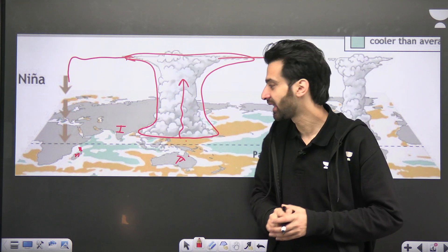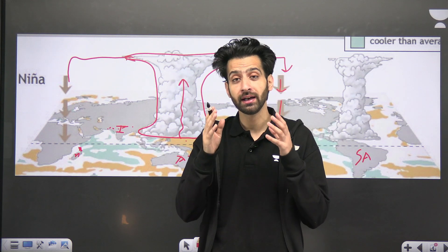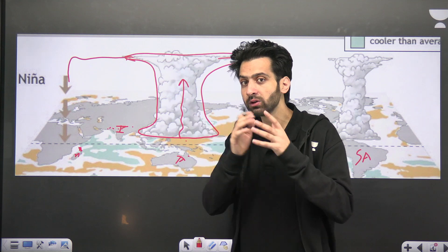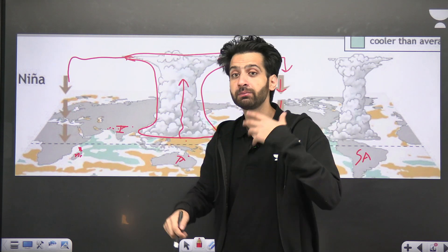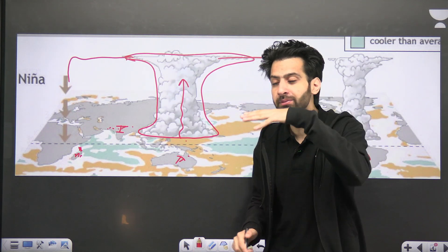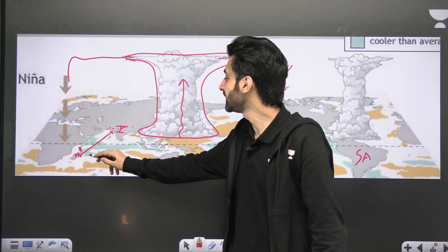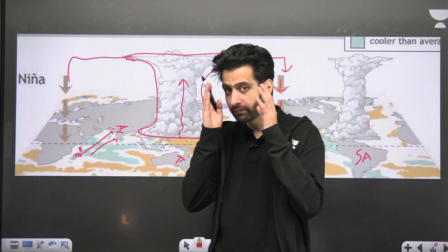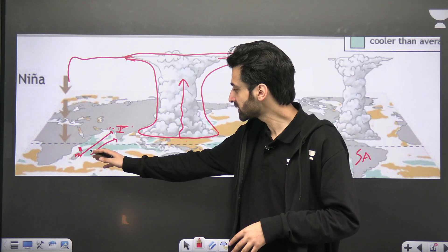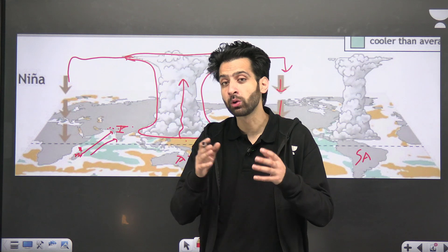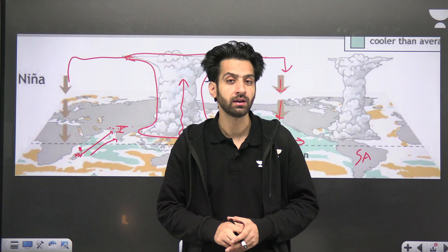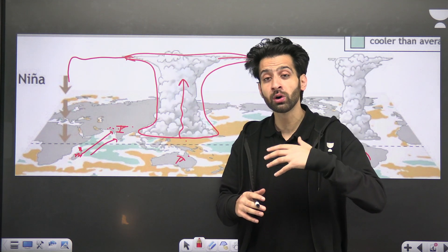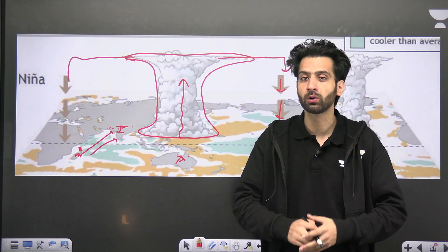During summer, the ITCZ is over India and India has high temperature conditions, which means low pressure. But at the Mascarene High, we have high pressure. As you know, wind blows from high pressure to low pressure, so winds start to blow towards India. Because these winds blow over water bodies, they carry moisture with them, which eventually causes rainfall in India. During La Niña years, there will be very heavy rainfall. That is how La Niña improves and causes more rainfall in the monsoon season.